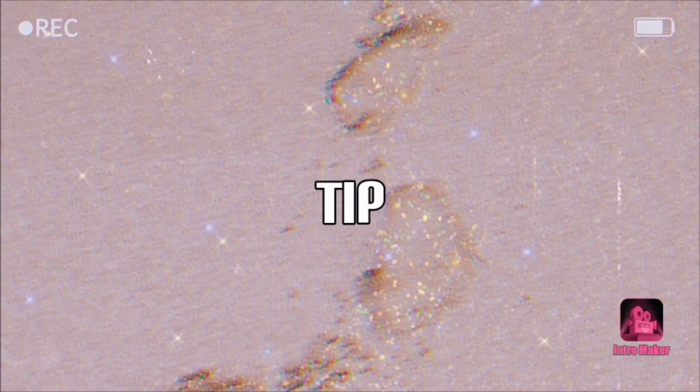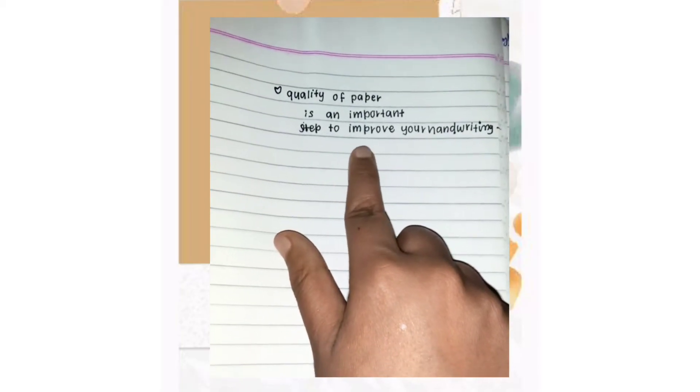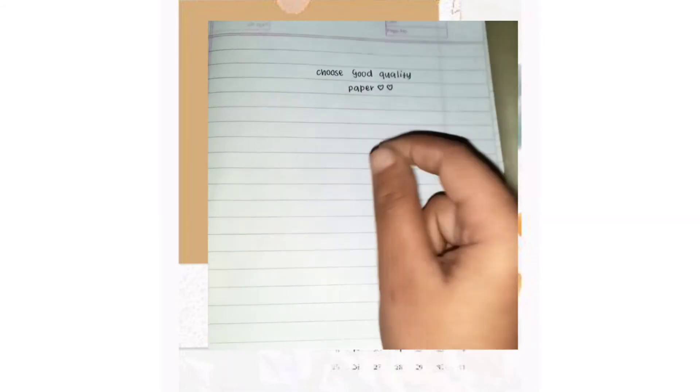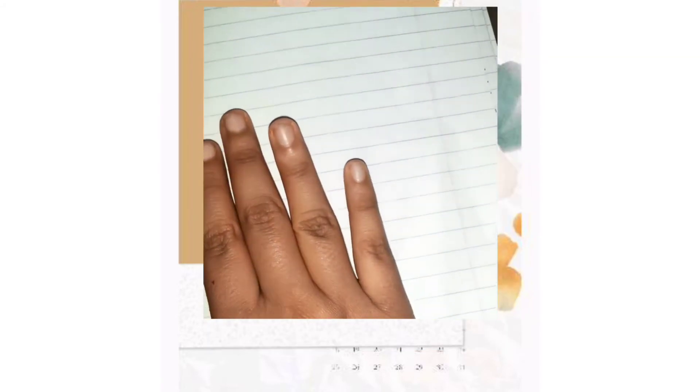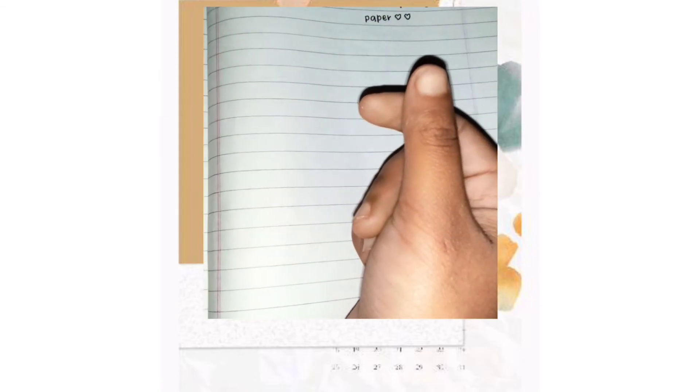Tip number four, choose the paper wisely. So if we talk about where actually we are going to write, paper with best quality comes in our mind. Since the quality of the paper is very important because some of the paper may be so hard that the writing experience in those papers may not be pleasurable for you. So make sure that the paper you use is smooth enough so that you could write well and also prefer it.